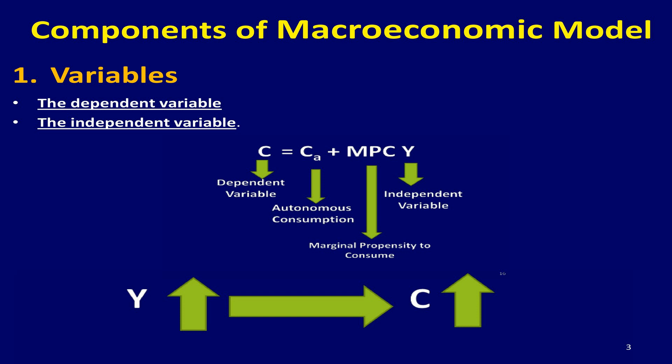The independent variable is also known as an exogenous variable. Its value is determined outside the model — it is not explained within the model. For example, in the consumption equation, gross domestic product has a positive effect on personal consumption spending: as gross domestic product increases, personal consumption spending will increase. Therefore, gross domestic product is an independent variable.